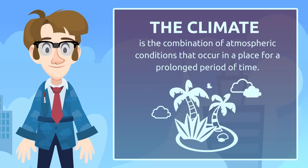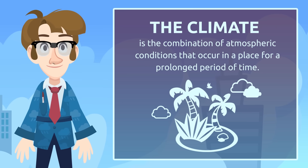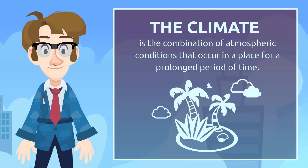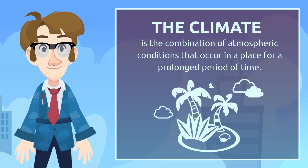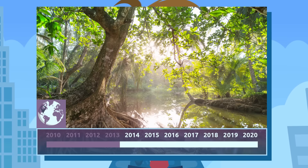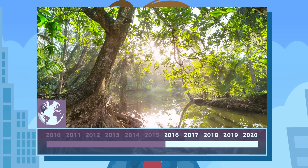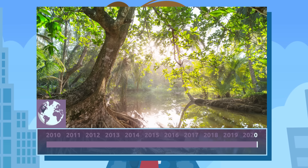Very well — you're observing the weather. In contrast, the climate is the combination of atmospheric conditions that occur in a place for a prolonged period of time. For example, the predominant climate in Central American woods is the tropical climate.